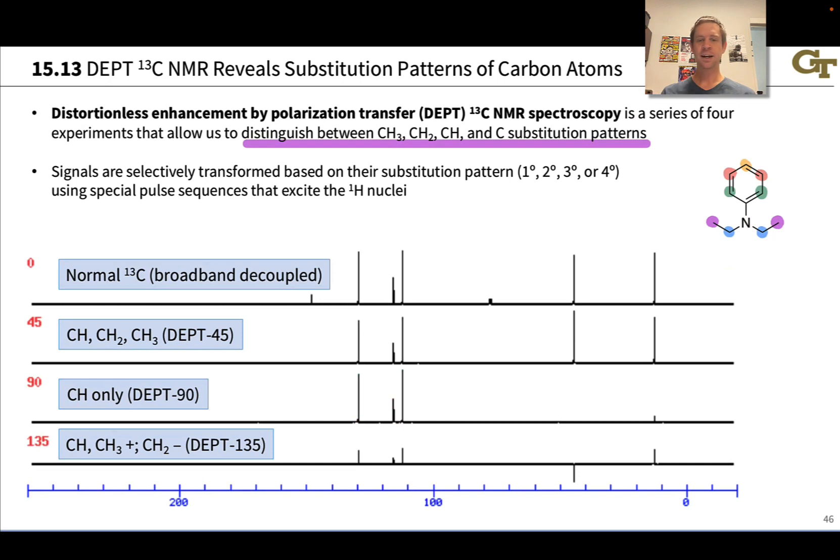The zero degree is just our plain vanilla carbon-13 NMR spectrum. I think it's helpful to start with the 90-degree spectrum, which immediately tells us which signals correspond to CH, only one hydrogen connected to the carbon. It's these three: the red, orange, and green. The important point is these are the three CH carbons in the benzene ring of the compound.